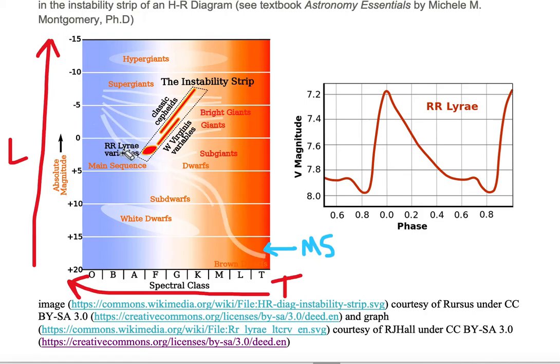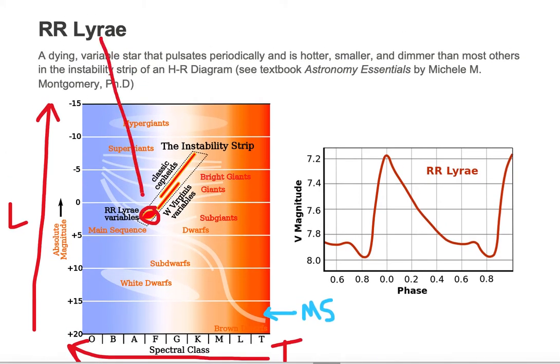Just right above this diagonal is a group of stars known as RR Lyras. They're not on the main sequence, they're just slightly above the main sequence.